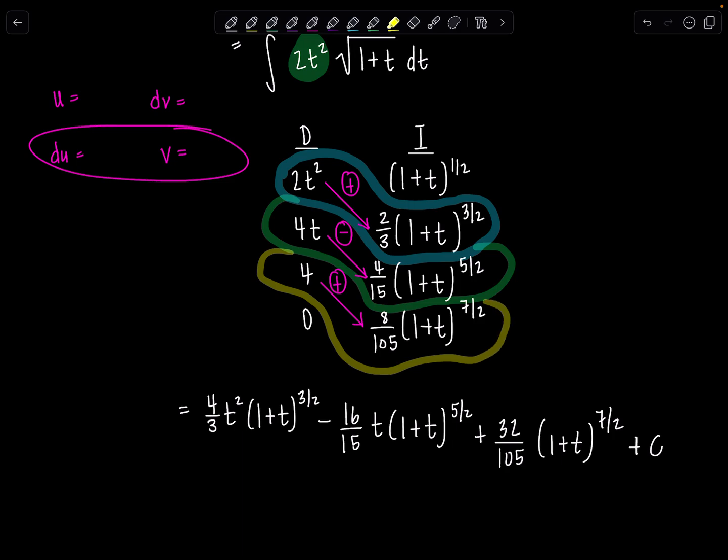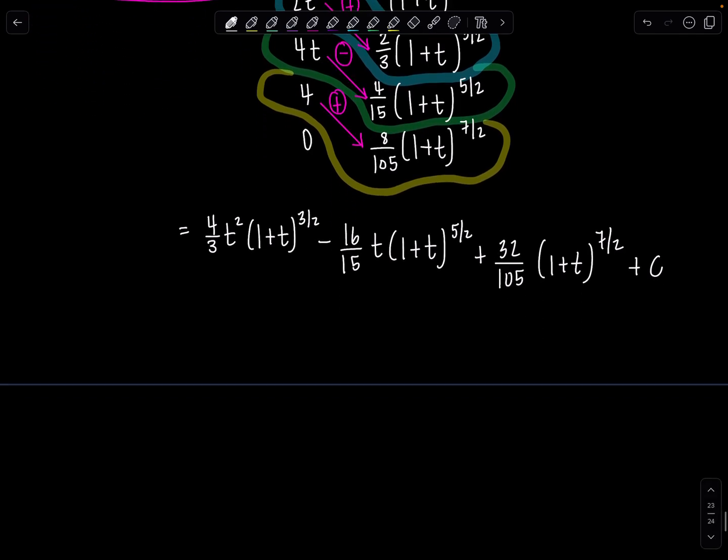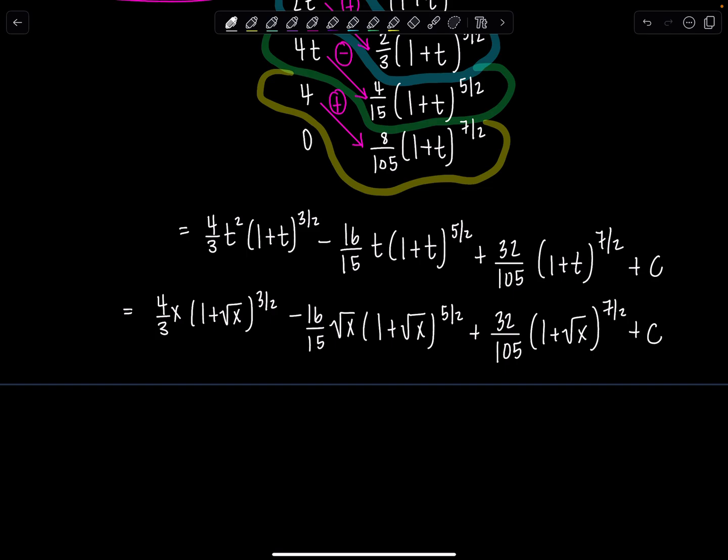Okay, and then all we need to do is go back to the original variable which was x. And remember we had let t equal the square root of x. So from here we'll have 4 thirds. Square root of x squared is just x, 1 plus square root of x to the 3 halves, minus 16 over 15 square root of x, 1 plus square root of x to the 5 halves, plus 32 over 105, 1 plus square root of x to the 7 halves plus c. And we're done.